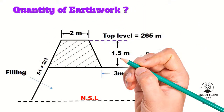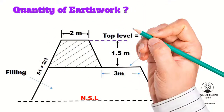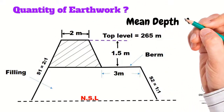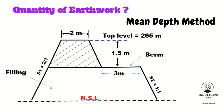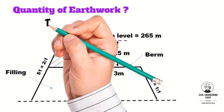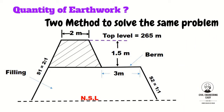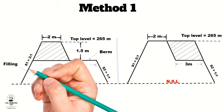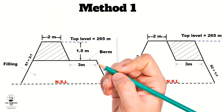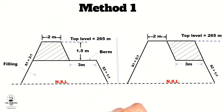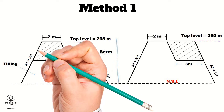The quantity of earthwork can be worked out by various methods, but the mean depth method will be reasonable due to its simplicity and accuracy. According to this method, there are two ways to solve this problem. In the first method, two separate embankments will be considered.